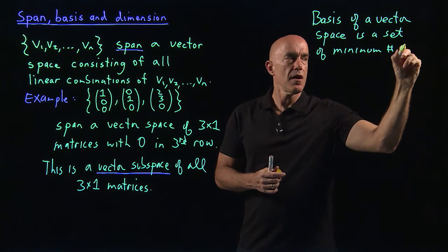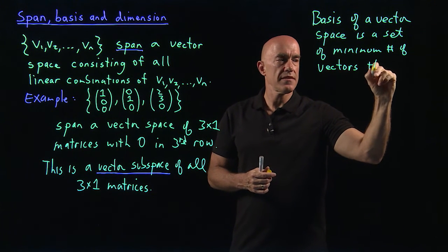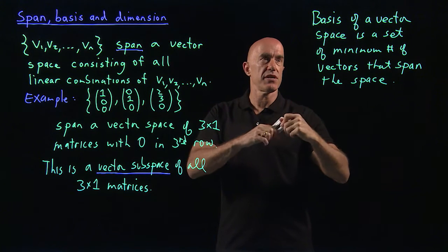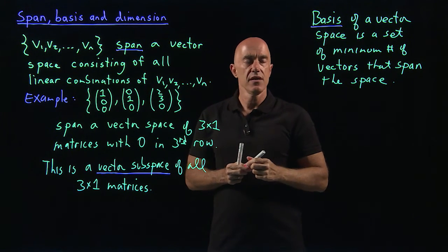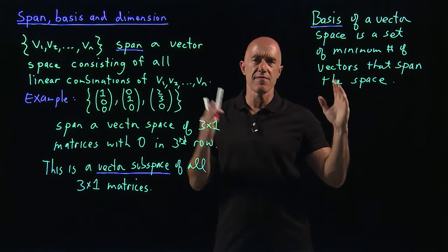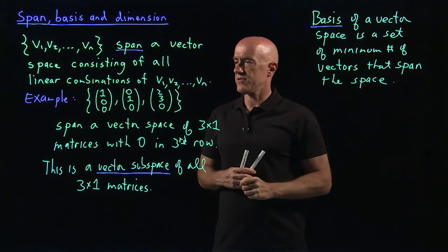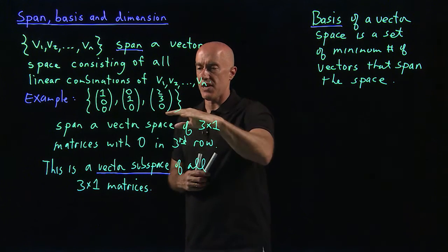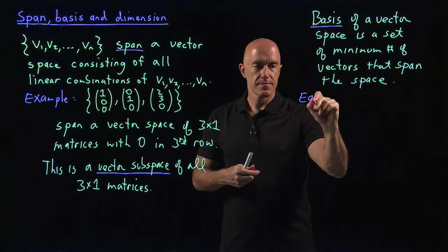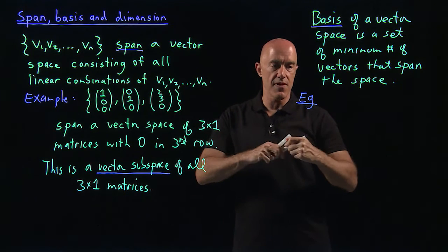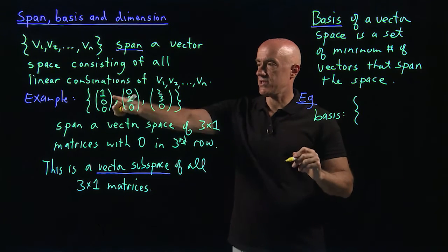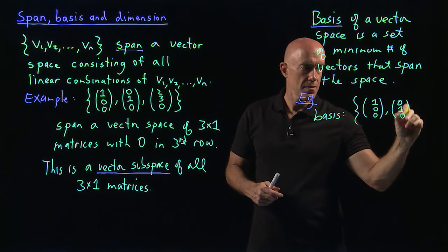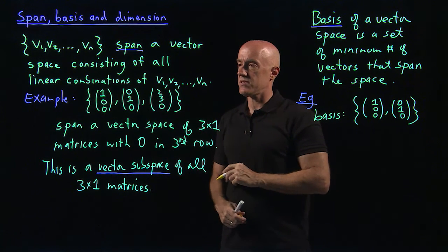And that's the definition of a basis. A basis of a vector space is a set of the minimum number of vectors that span the space. So it's the smallest set of vectors that can span the vector space. Here, the basis for the vector space of 3 by 1 matrices with 0 in the third row could be just the first 2 vectors, which forms a basis for this vector space.